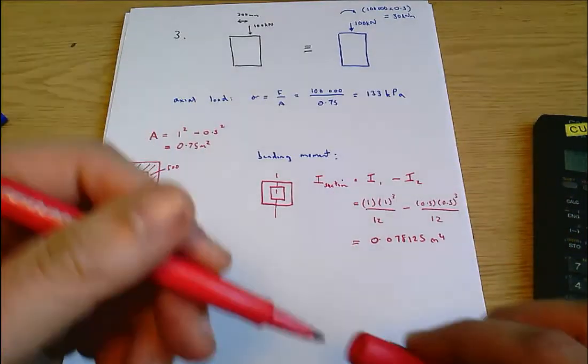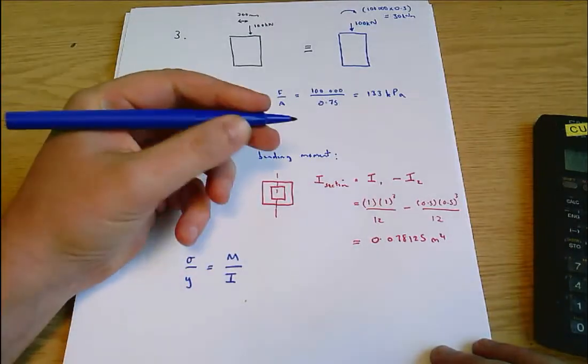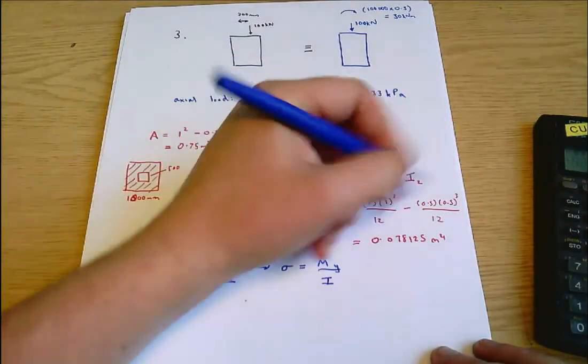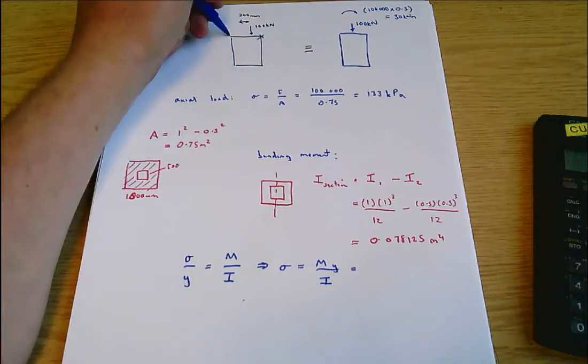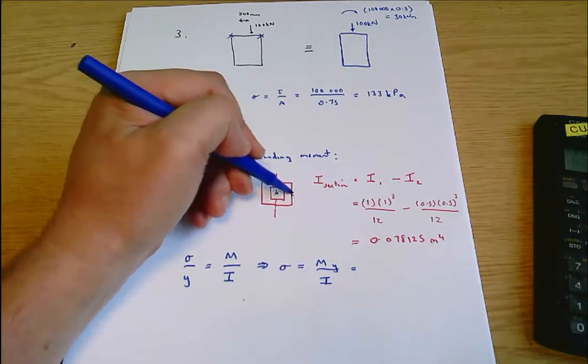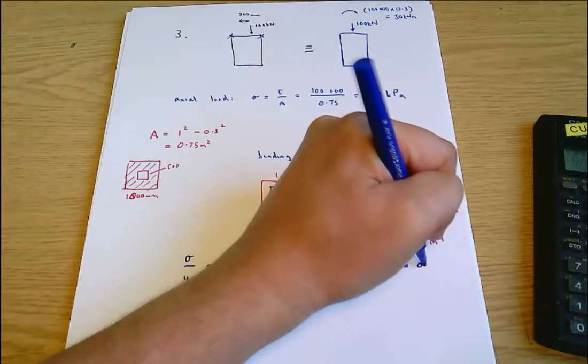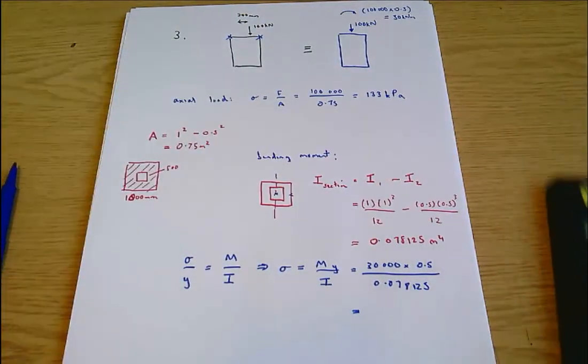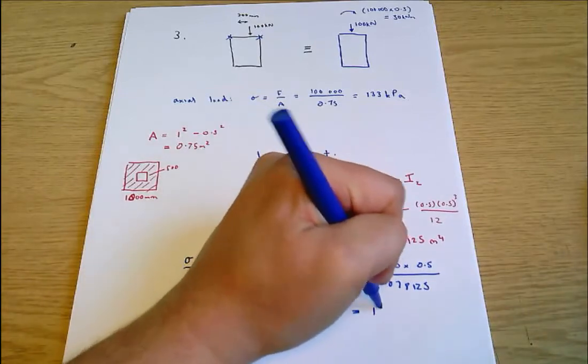So now we can say for the bending moment calculation, from the data sheet, sigma over y equals M over I, and therefore sigma equals My over I. In the question we were asked for the maximum and minimum normal stresses, so we'll find the extreme values. These two points here, which means y is 500 millimeters - it's the distance from this neutral axis to the extreme point we're interested in. So then 30,000 is our moment times 0.5 meters is our value of y, divided by 0.078125, which comes out as 192 kilopascals.